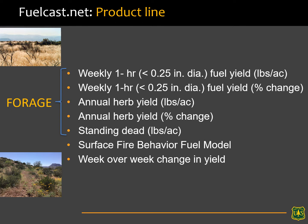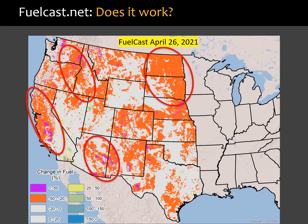In our product line, consider the components of forage we produce. The weekly one-hour fuel yield — that's the really fine fuel stuff, the herbs and fine leaves — provided not only as yield in pounds per acre but also as percent change. We also bifurcate this pool of yield by the annual herbaceous: where there's cheatgrass, tumble mustard, etc. Importantly, we keep track of standing dead material coming into the growing season, which is critical from both an herbivory and a fire and fuel standpoint.